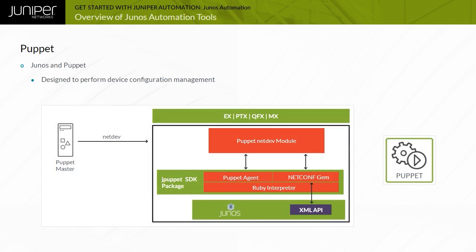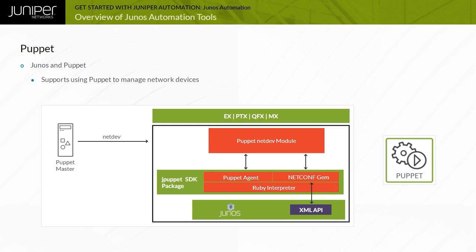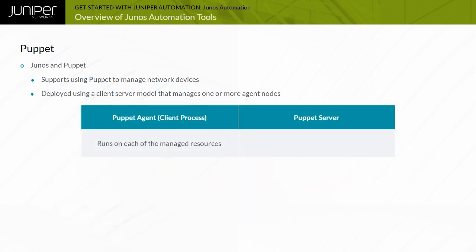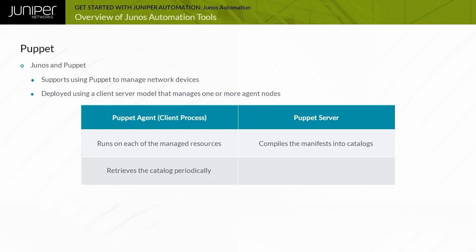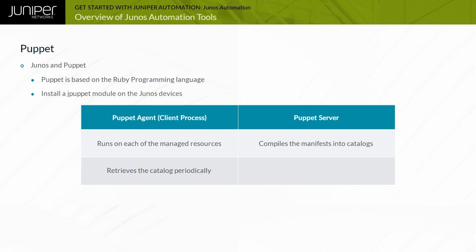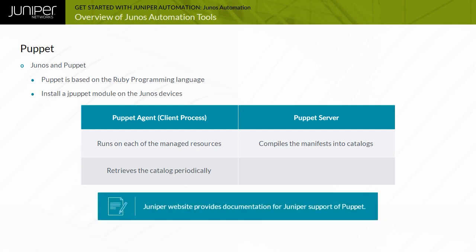Puppet is designed to perform device configuration management and provides an efficient and scalable solution for managing configurations on a large number of devices. System administrators frequently use Puppet to manage compute resources such as physical and virtual servers. Juniper Networks supports using Puppet to manage network devices running Junos. Puppet is deployed using a client-server model where the Puppet server manages one or more agent nodes. The Puppet agent runs on each managed resource. Puppet's manifest files describe the desired system configuration. The Puppet server compiles the manifests into catalogs, and the Puppet agent periodically retrieves the catalog and applies the necessary changes. Puppet is based on Ruby. To use Puppet with Junos devices, you need to install the JPuppet module on the Junos device.